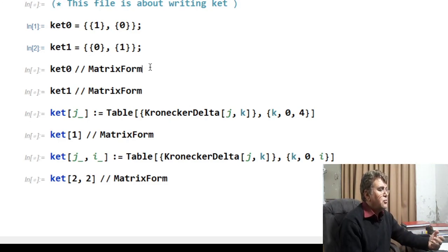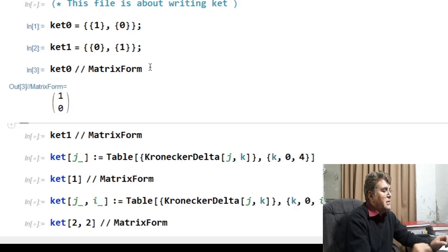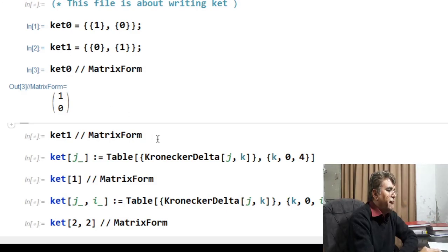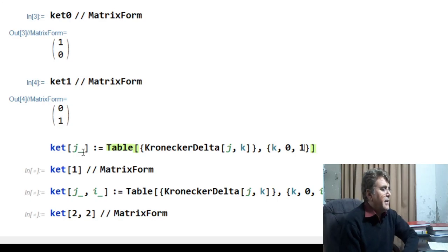So I would like to invoke the matrix command and run it and I have the column matrix with 1 in the first row and 0 in the second row. Similarly, if I run the second ket, I get this matrix with entry in the second row is not 1. Okay, that's the way a beginner would write a ket.